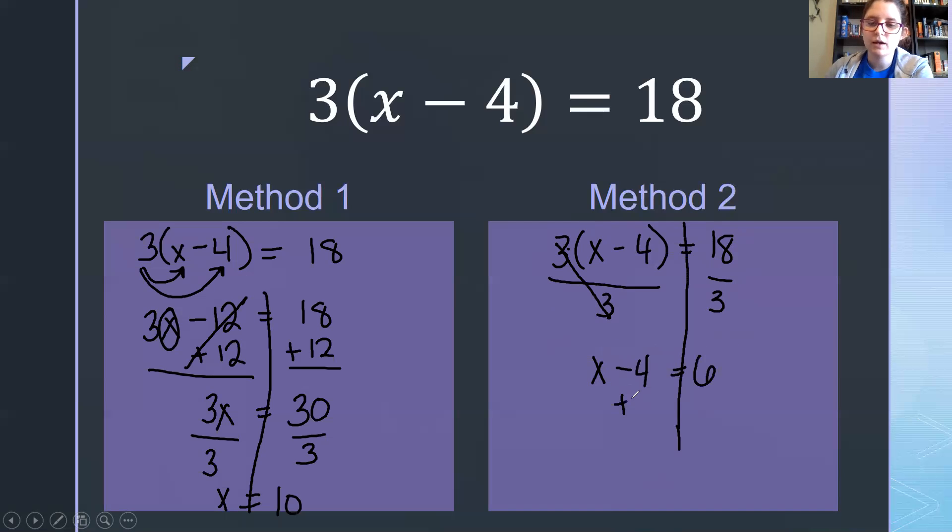We're going to undo our subtraction with addition. Plus 4 minus 4 cancel, so we're left with x equals 10. Okay, that's our first example.